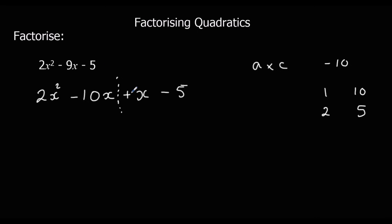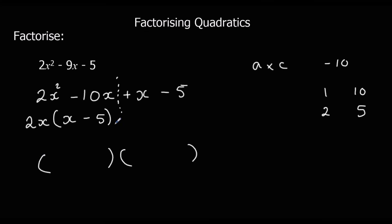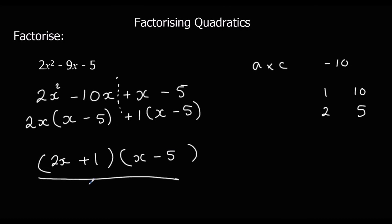Cut it down the middle and factorise the first half. The common factor between 2 and 10 is 2, and they've both got an x. So 2x times x makes 2x squared, and 2x times minus 5 makes minus 10x. We start to form our brackets. We know the second bracket is going to be the same: x minus 5. And what's left? There's no common numerical factor, so it's just 1. So we have (2x plus 1)(x minus 5). That's the final answer.